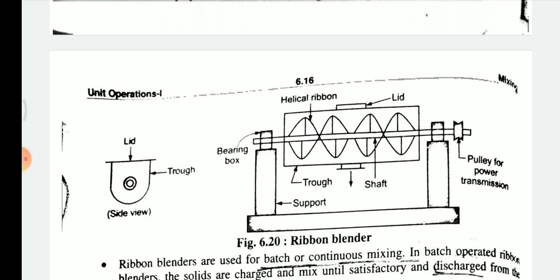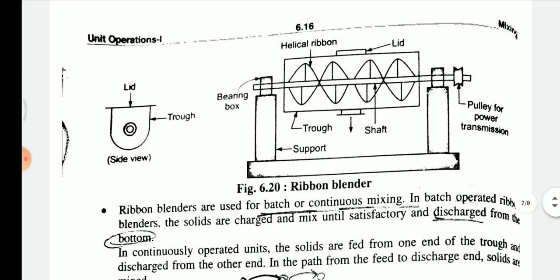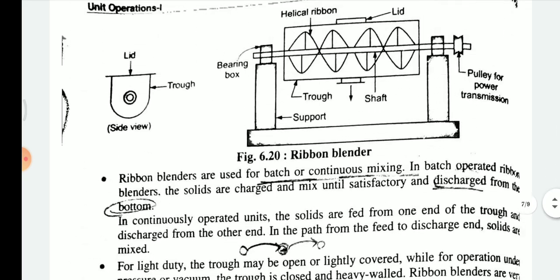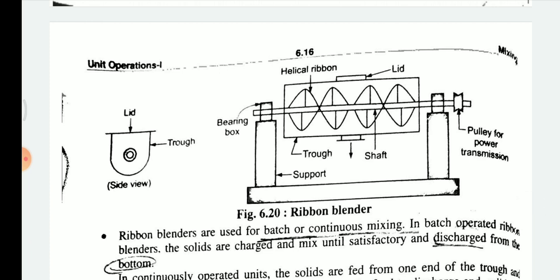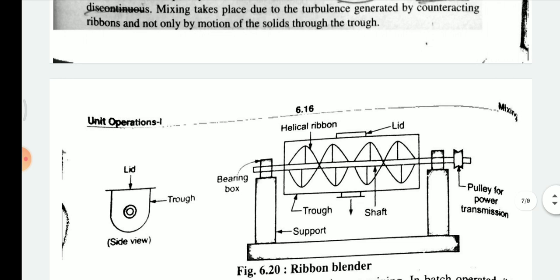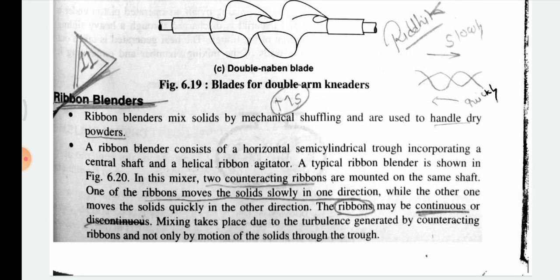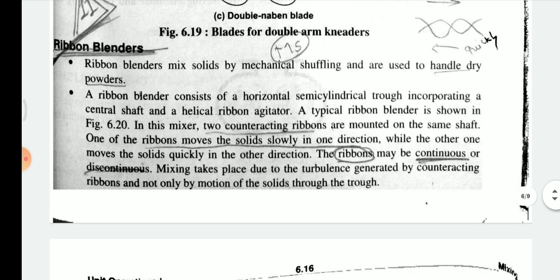There is a horizontal cylindrical casing with a central shaft mounted inside. The mounted shaft is connected to a bearing box, and the bearing box is connected to the power transmission. The construction is helical in formation, and the side view is also shown. In this mixer, two counter-acting ribbons are mounted on the same shaft.